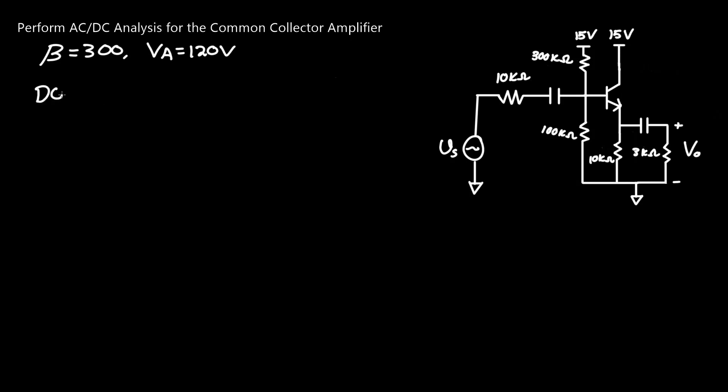Under DC conditions, we know that capacitors are open. This means that anything to the left of this capacitor here is null under DC conditions, as well as anything to the right of this resistor. We need to find our Thevenin equivalent resistance as well as voltage, since we have two biased resistors here.